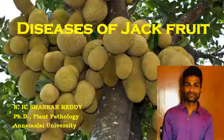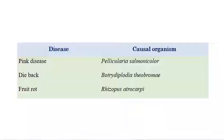The important diseases in jackfruit are: first, pink disease, which is caused by Pellicularia salmonicolor; dieback, which is caused by Botryodiplodia theobromae; foot rot; and Rhizopus atracarpi.